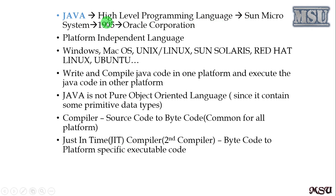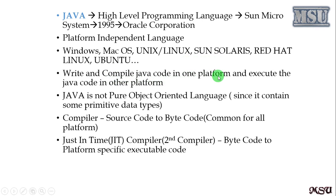Let's come to Java. Java is a high-level programming language, initially created by Sun Microsystems in 1995. Now it is owned by Oracle Corporation. It was created by James Gosling. One of the main features of Java is that it is a platform-independent language, which means you can create Java code on one platform and execute it on another platform — whether Windows, Mac OS, Unix, Linux, Solaris, or any platform. Write and compile Java code on one platform and execute it on other platforms.